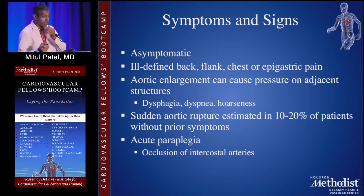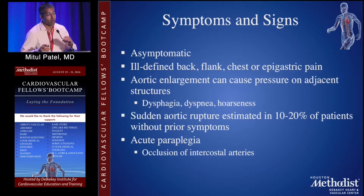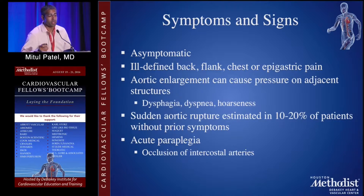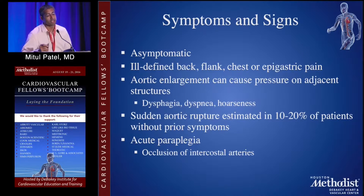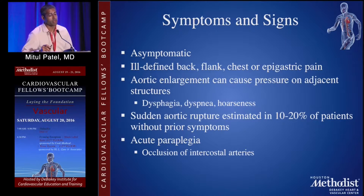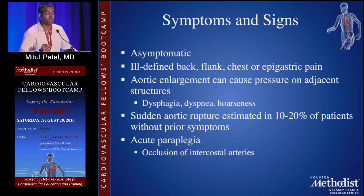Signs and symptoms: these are usually asymptomatic and most are found incidentally on a CT performed for something else. They may present as ill-defined back, flank, chest, or epigastric pain. Aortic enlargement can cause pressure on adjacent structures resulting in dysphagia, dyspnea, or hoarseness. Sudden aortic rupture occurs with no prior symptoms in an estimated 10 to 20% of patients. Acute paraplegia can also occur due to occlusion of the intercostal arteries.